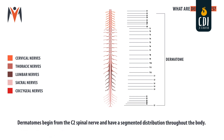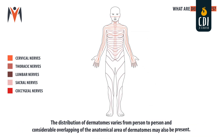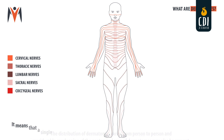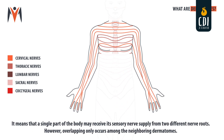Dermatomes begin from the C2 spinal nerve and have a segmented distribution throughout the body. The distribution of dermatomes varies from person to person, and considerable overlapping of the anatomical area of dermatomes may also be present. It means that a single part of the body may receive its sensory nerve supply from two different nerve roots. However, overlapping only occurs among the neighbouring dermatomes.